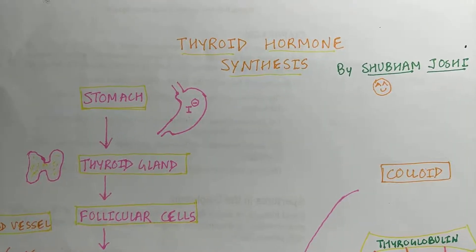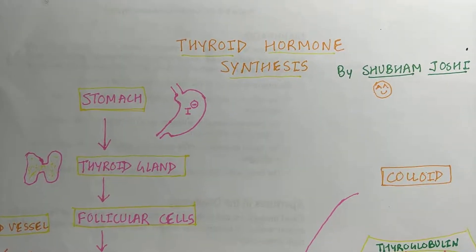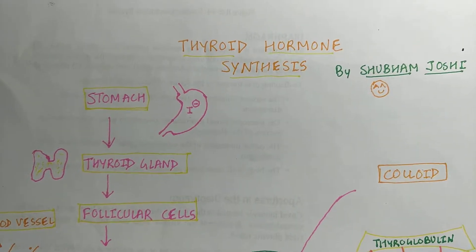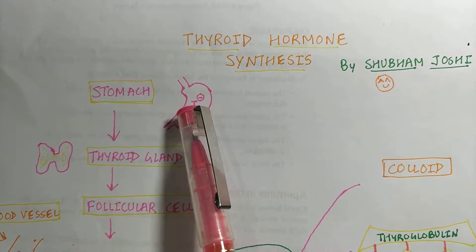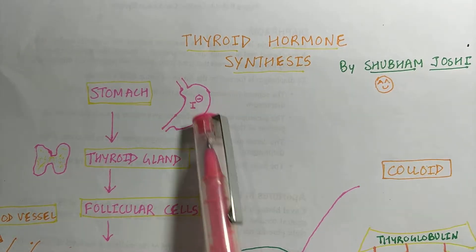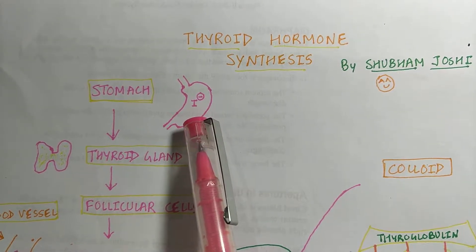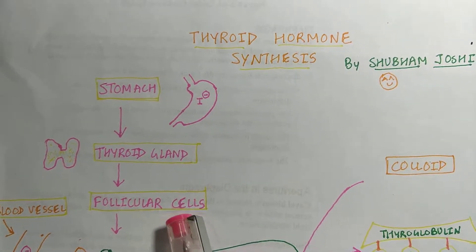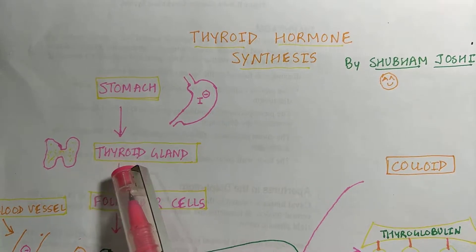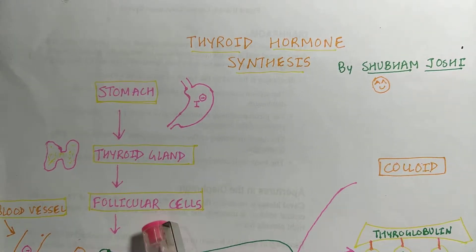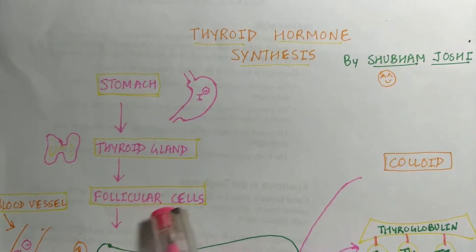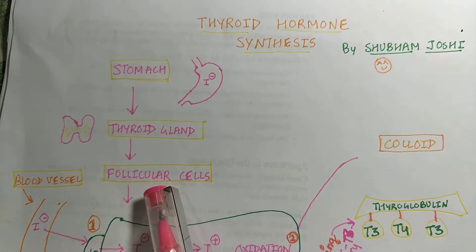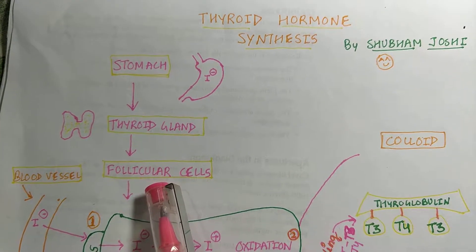Hello everyone. Today we are going to discuss thyroid hormone synthesis. The iodine is taken up by the diet, goes to the stomach, and then to the thyroid gland. The thyroid gland has two cell types: follicular cells and parafollicular cells. The follicular cells are the cells which produce thyroid hormone.